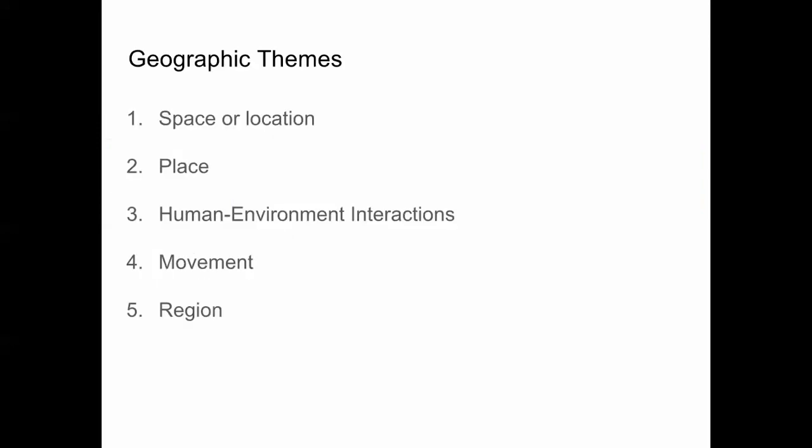Geography deals with five big, broad themes: space or location, place, the interaction of humans and their environment, movement through space, and region. Region, in some respects, is what this class is really about, and it pulls all of those things together in a coherent whole. Let me take these five apart, and that will wrap up this introductory lecture on what geography is.